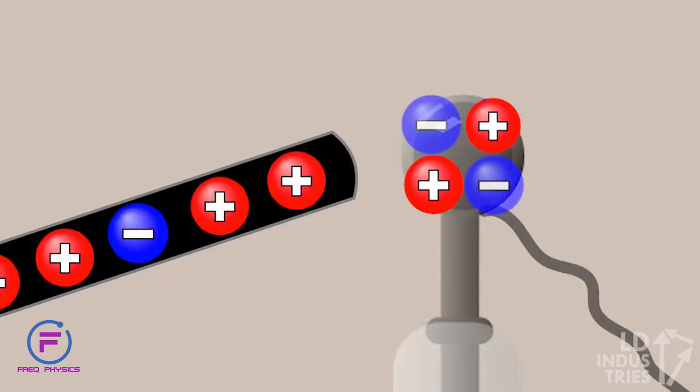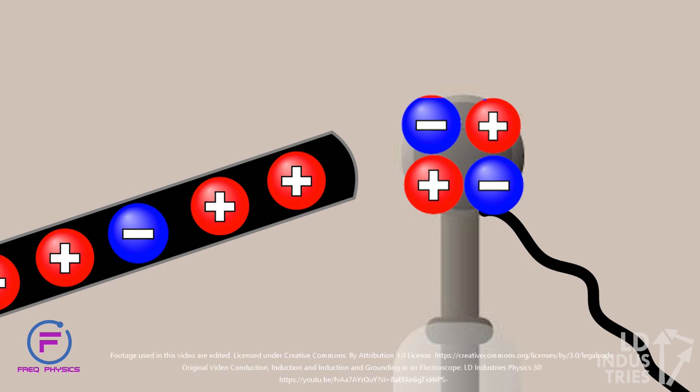To practice this yourself, try and draw out what would happen if a positive rod was brought close to a neutral electroscope.